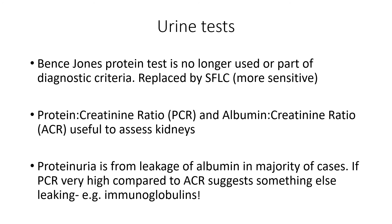Most people who have proteinuria are leaking albumin — that's the vast majority of nephrotic syndromes. So if your PCR is very high compared to your ACR, this suggests it's not albumin leaking from the kidneys but something else — in this context, we'd be talking about immunoglobulins.